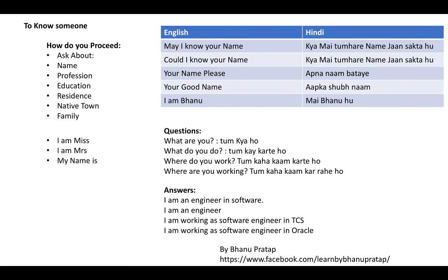The answer could be: 'I am an engineer in software' — main engineer hoon software mein — or 'I am an engineer,' or 'I am working as a software engineer in TCS,' or 'I am working as a software engineer in Oracle.' If you are able to reply with any one sentence, you can convey your message. English mein ek bhi sentence bol paate ho to saamne wale ko samjha paoge ki aap kya karte hain.